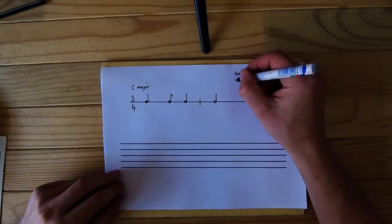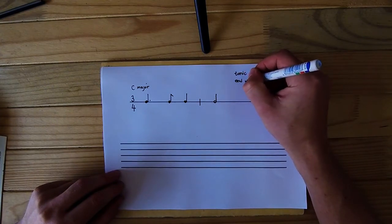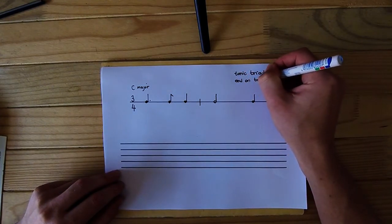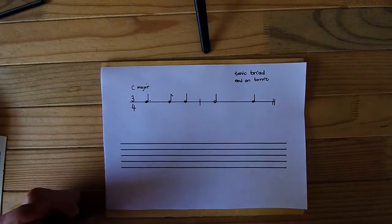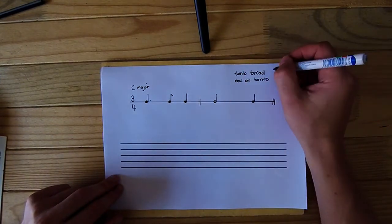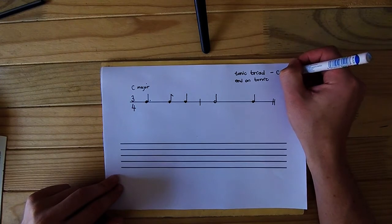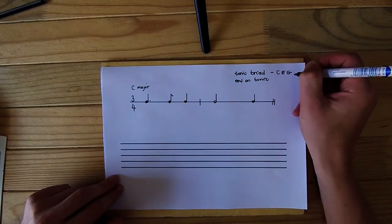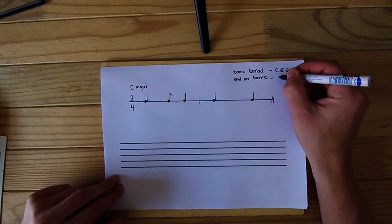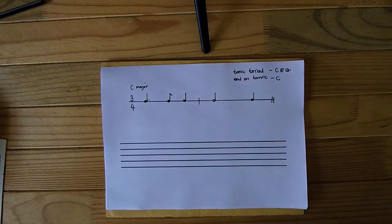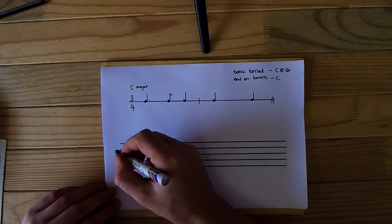And you have to end on the tonic. The notes of the tonic triad for C major is C, E, and G. And the tonic, of course, is C, tonic meaning first notes. So now we're just going to go and write it.